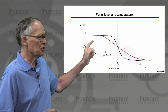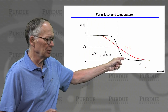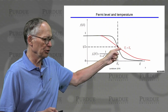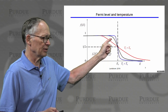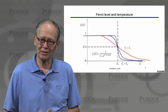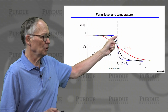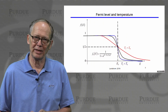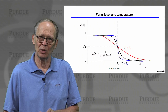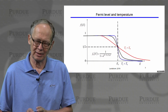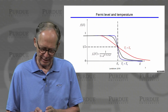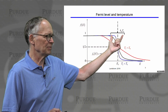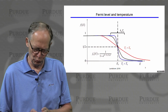There's a transition between 1 and 0 that depends on temperature. The higher the temperature, the broader that transition; the lower the temperature, the narrower that transition. At T equals 0 we would get a step function — all states below the Fermi level would be occupied with probability 1, and all states above the Fermi level would have no probability of being occupied. The width of this transition region is a few kT in energy.